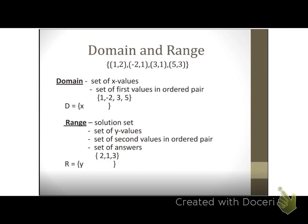We're still using the same example: (1, 2), (-2, 1), (3, 1), (5, 3). You just use your squiggly brackets and list all the X values from your ordered pairs. First X value is 1, second is -2, third is 3, fourth is 5. So they just took all the X values and listed them in those squiggly brackets to denote a set.